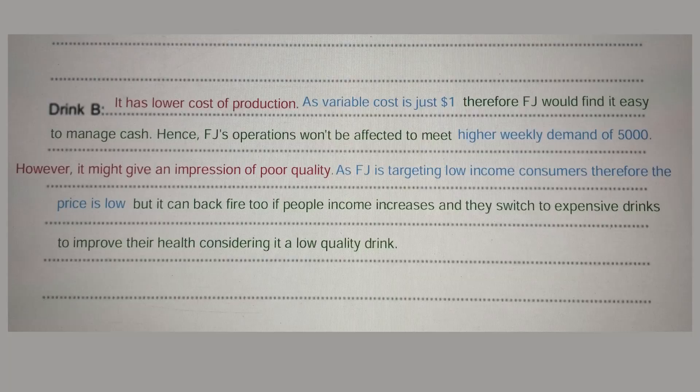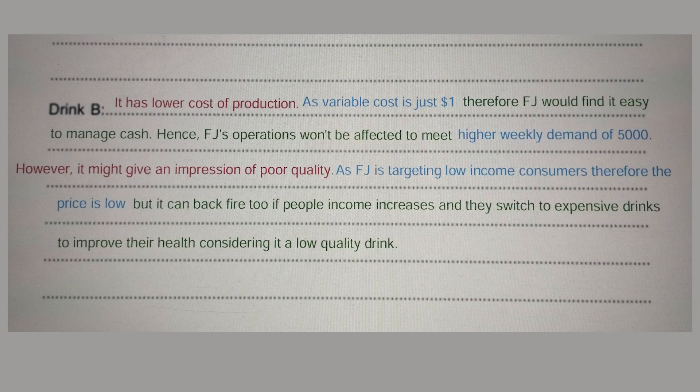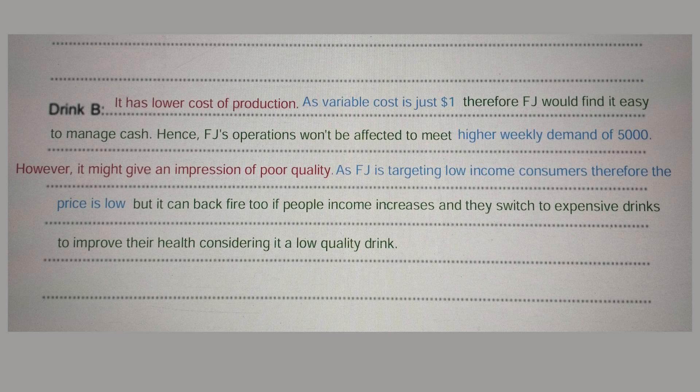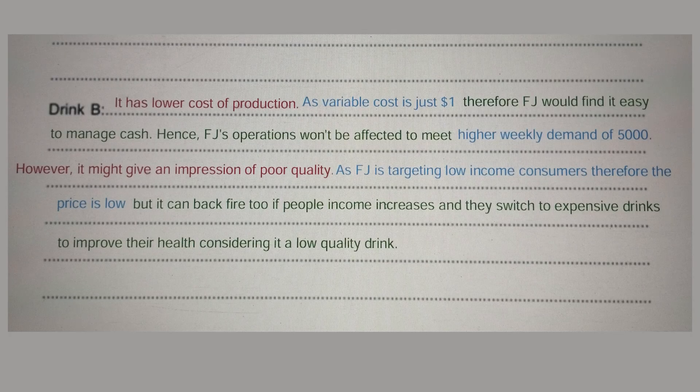For Drink B: 'it has lower cost of production' — that is knowledge. 'As variable cost is just $1' — that is application from the case study. 'Therefore FJ would find it easy to manage cash, hence FJ's operations won't be affected to meet the higher weekly demand of 5,000' — that is analysis, showing the impact on the business. I used 'therefore' and 'hence' to demonstrate I am in my analysis.